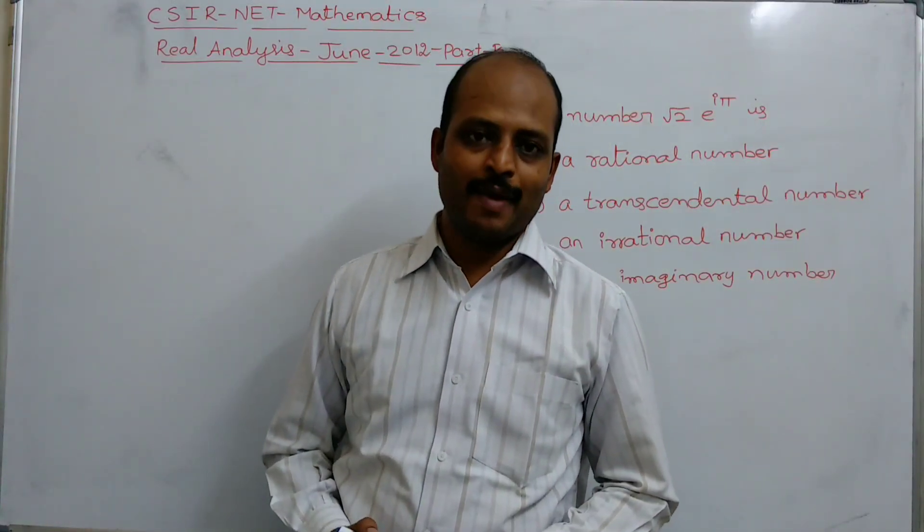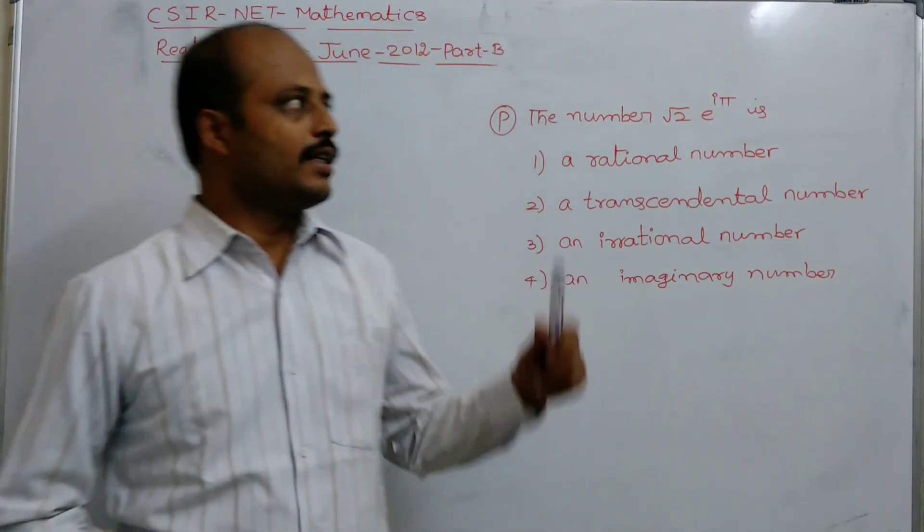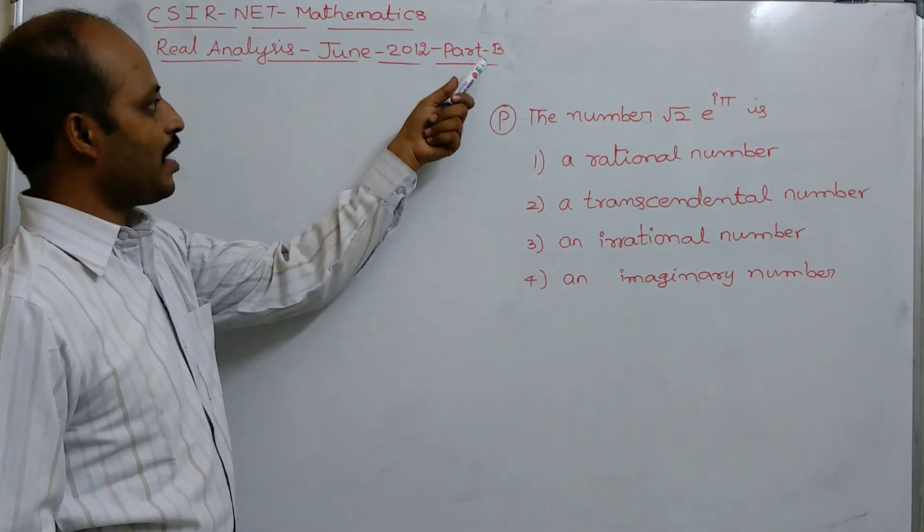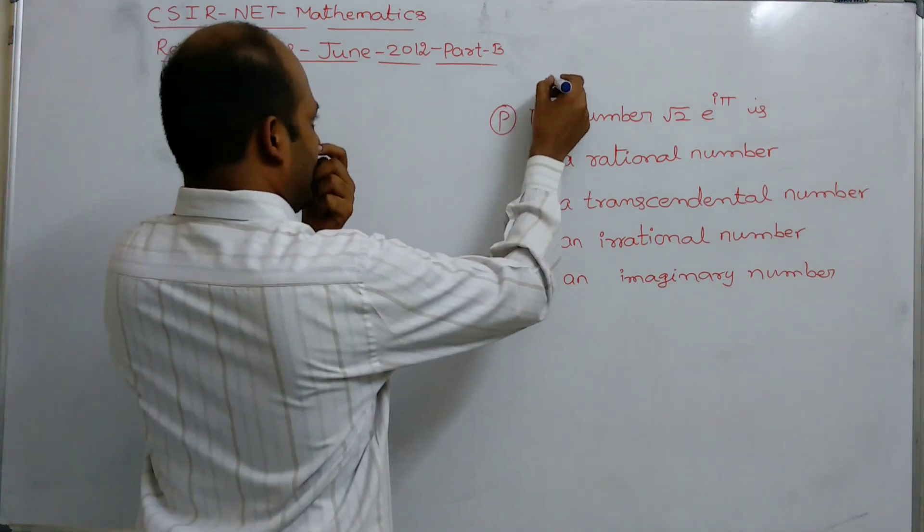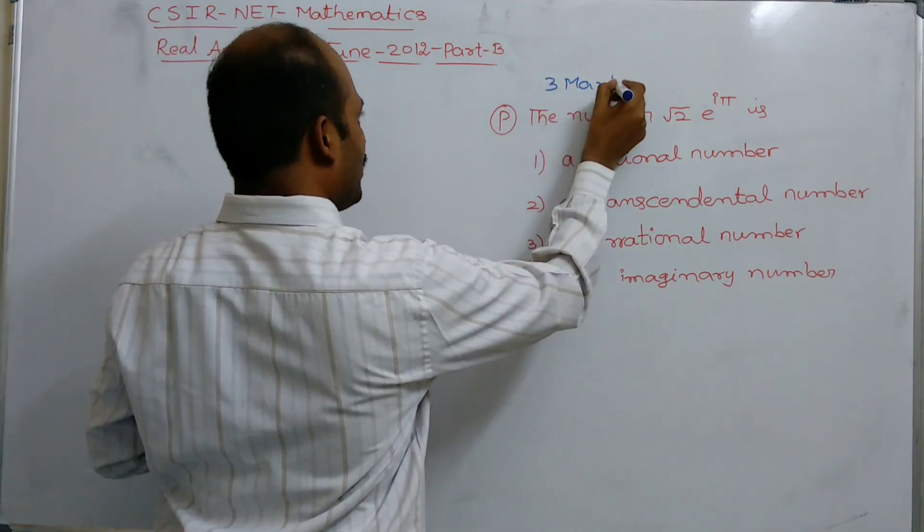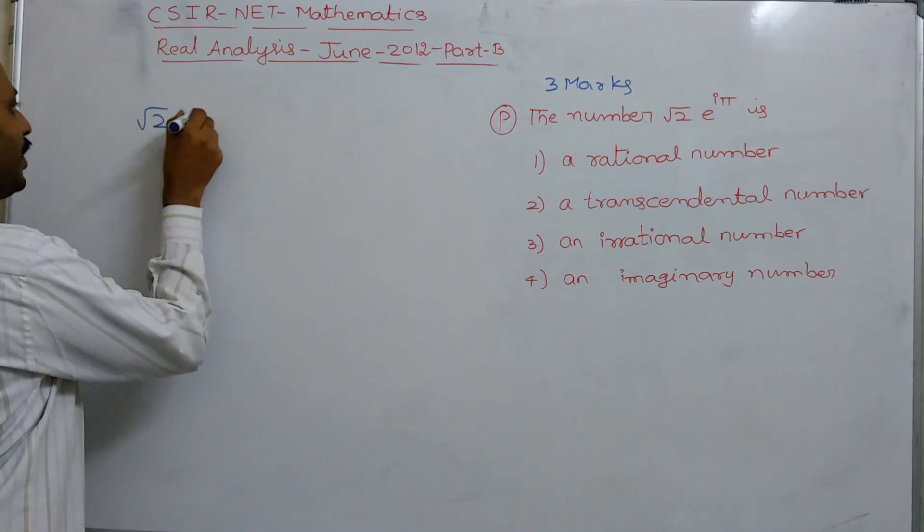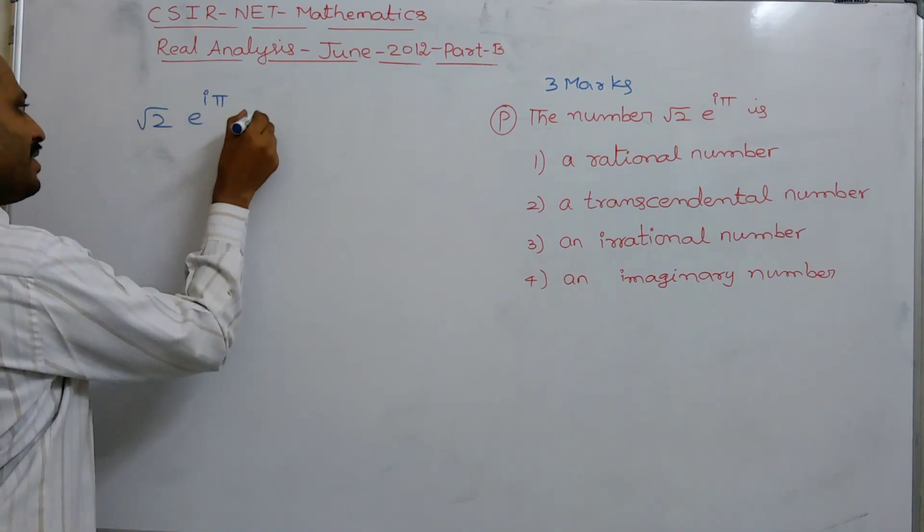Hi, welcome to Sunil Maths Tutorial Online Classes. CSIR NET Mathematics, Real Analysis, June 2012, Part B question which carries 3 marks. This is a simple question: the number √2 × √2 × e^(iπ) is...